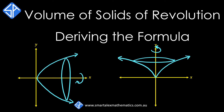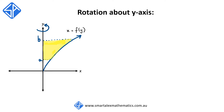In this video we're going to look at how to derive the formula for finding the volume of solids of revolution using integration. Suppose we have a region bounded by the function x is equal to f of y, the y-axis, the lines y is equal to a and y is equal to b as shown in the diagram, and we rotate this region about the y-axis, then we're going to be able to generate a solid of revolution that looks like this.